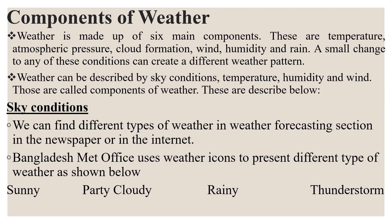Components of weather: weather is made up of six main components. These are temperature, atmospheric pressure, cloud formation, wind, humidity, and rain. A small change to any of these conditions can create a weather pattern. Weather can be described by sky conditions, temperature, humidity, and wind. Those are called the components of weather.